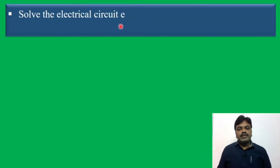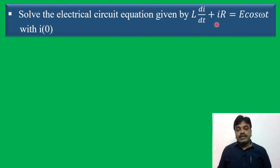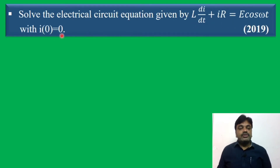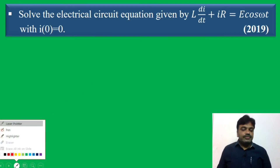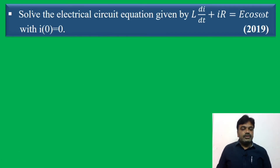Solve the electrical circuit equation given by L dI/dt + Ir = E cos(ωt), with I(0) = 0. This is a 2019 question and it is very, very important. Let us see the solution.